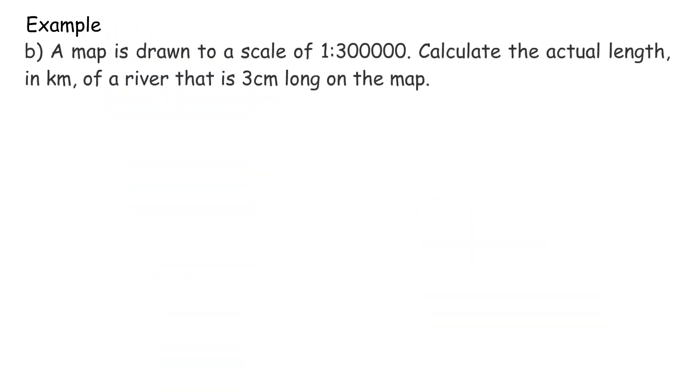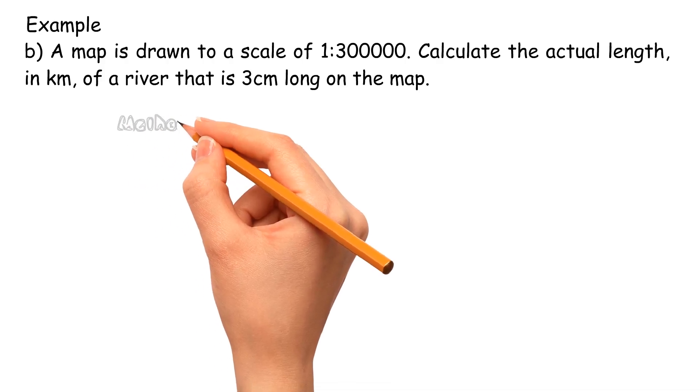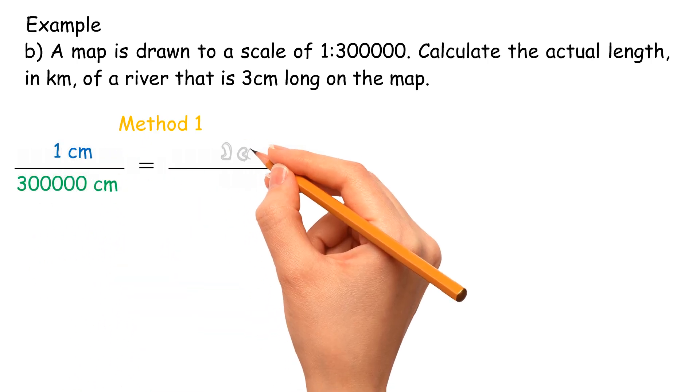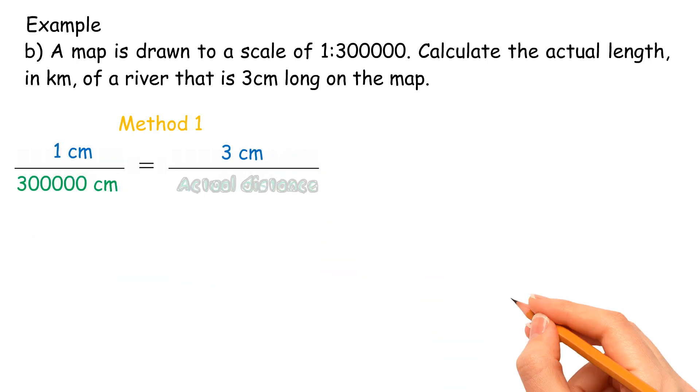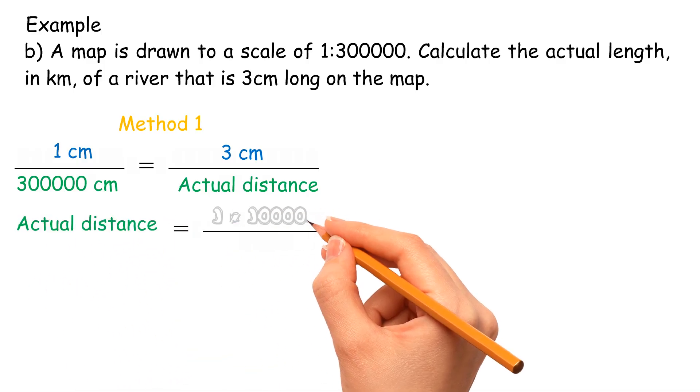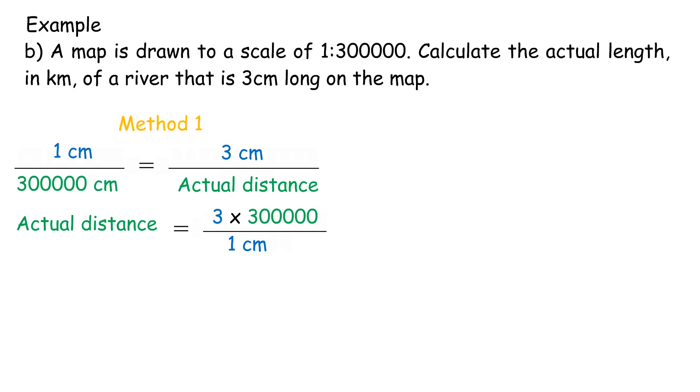Example b, a map is drawn to a scale of 1 is to 300,000. Calculate the actual length, in km, of a river that is 3 cm long on the map. Method 1: 1 cm over 300,000 cm equals 3 cm over actual distance. Actual distance equals 3 times 300,000 over 1 cm equals 900,000 cm equals 9 km.